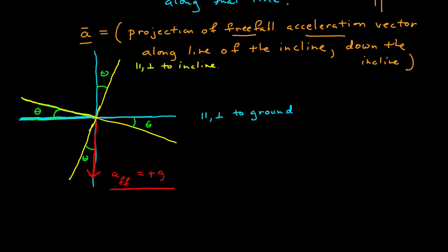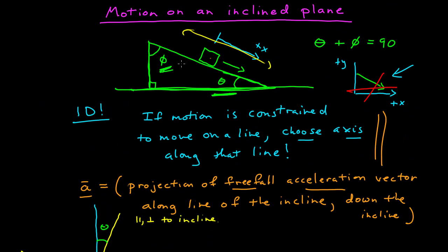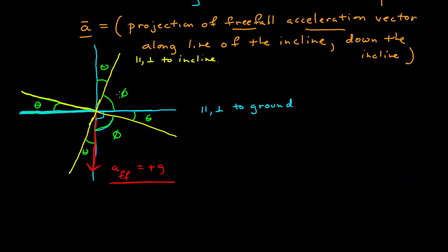Because the blue is a right angle, that means theta and this angle have to be 90 degrees. Well, we know what angle added to theta gives us 90 degrees, and that's phi. This angle. So this angle is phi, this angle is phi, and this angle is phi.